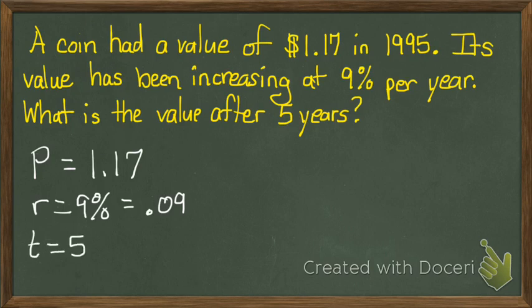Now, how it's compounded? Usually it will say compounded monthly, compounded quarterly, etc. But since it doesn't say any of those things and it's telling us it's 9% per year, it's compounded yearly. So N is going to equal one.